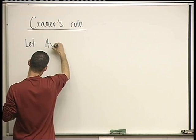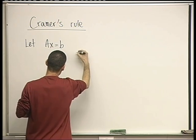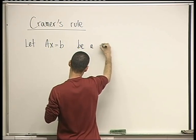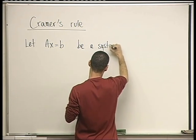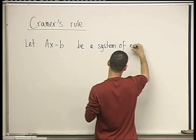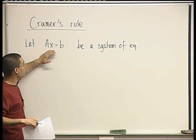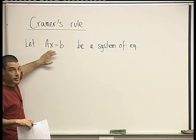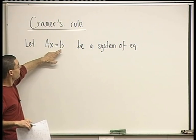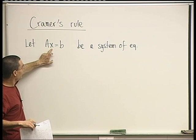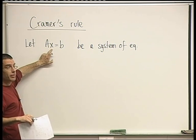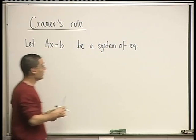Let Ax equals b be a system of linear equations. And there's going to be an assumption here that it's an n by n system, meaning the dimension of the number of variables and the number of equations are the same.